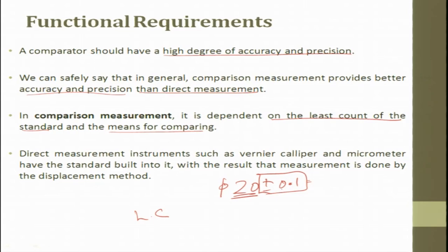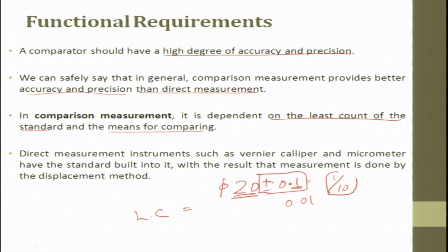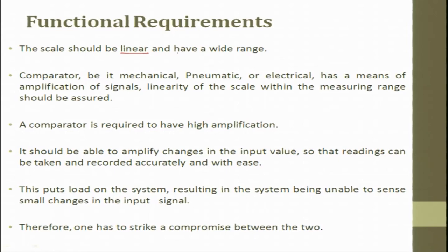If you are asking for a tolerance of 0.1 mm, the least count of the instrument should be one tenth of its measurement — so you should have a dial gauge with a least count of at least 0.01 mm to measure this tolerance variation. The thumb rule says the least count should be one tenth of the tolerance given. The direct measurement instruments such as vernier caliper and micrometer have a standard built into them, with the result that measurement is done by the displacement method. The scale should be linear and has to have a wide range.